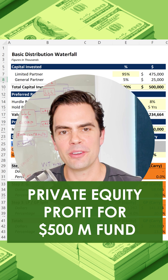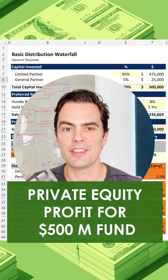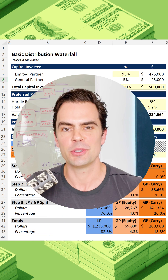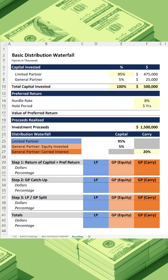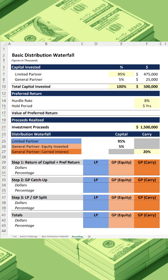Want to know how much money a private equity firm will make on a $500 million fund that triples in value? Let's build a distribution waterfall real fast to find out. Here we have a $500 million fund and we are going to assume the sponsors invest 5% to have skin in the game.